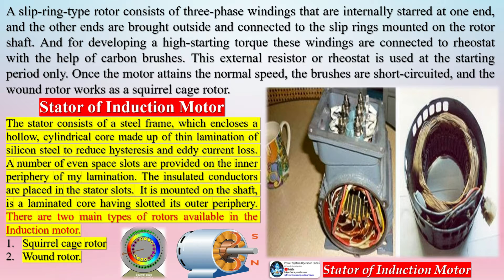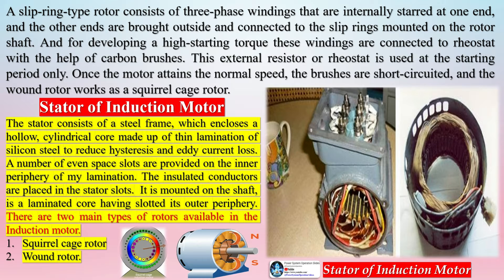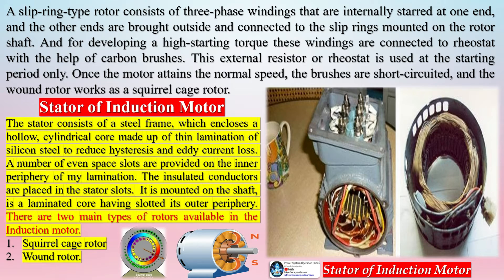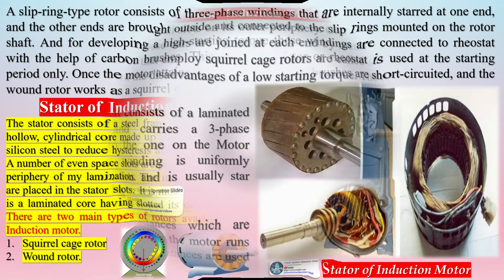The stator consists of a steel frame which encloses a hollow cylindrical core made up of thin laminations of silicon steel to reduce hysteresis and eddy current loss. A number of evenly spaced slots are provided on the inner periphery of the lamination, and insulated conductors are placed in the stator slots. The rotor, mounted on the shaft, is a laminated core having slots on its outer periphery.